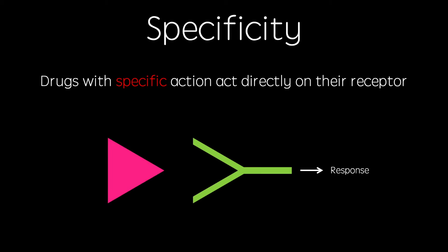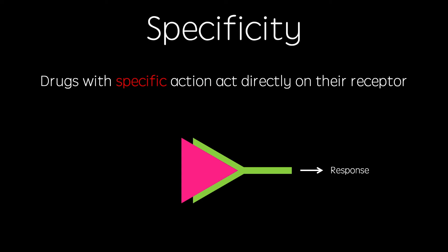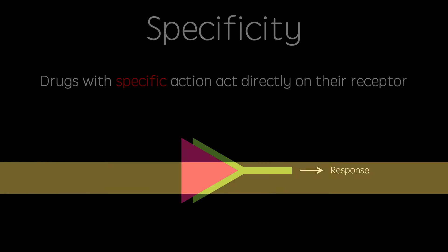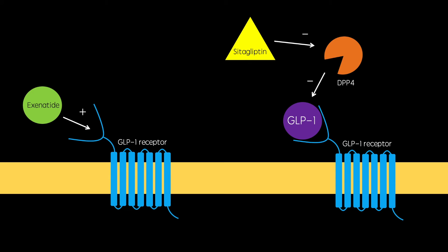Drugs with specific action act directly on their receptor to evoke a response. For example, exenatide is specific to the GLP-1 receptor and its binding directly evokes a response. However, sitagliptin is non-specific to the GLP-1 receptor, although it does produce the same response. So exenatide is specific and sitagliptin is non-specific. If you want to know more about these drugs, I'll provide links to my videos on GLP-1 analogues and DPP-4 inhibitors below.